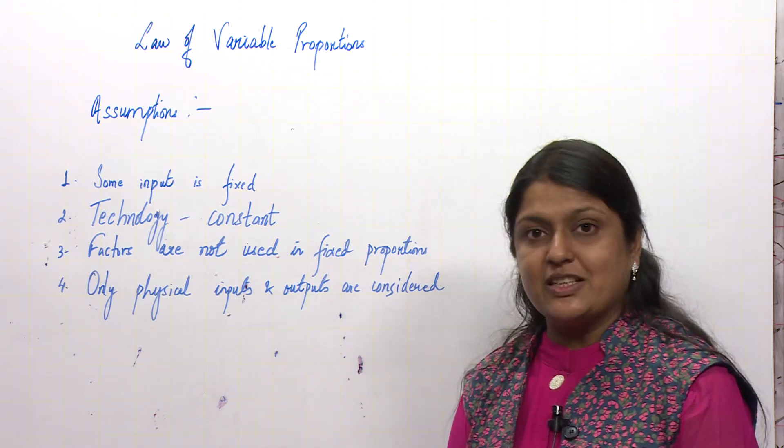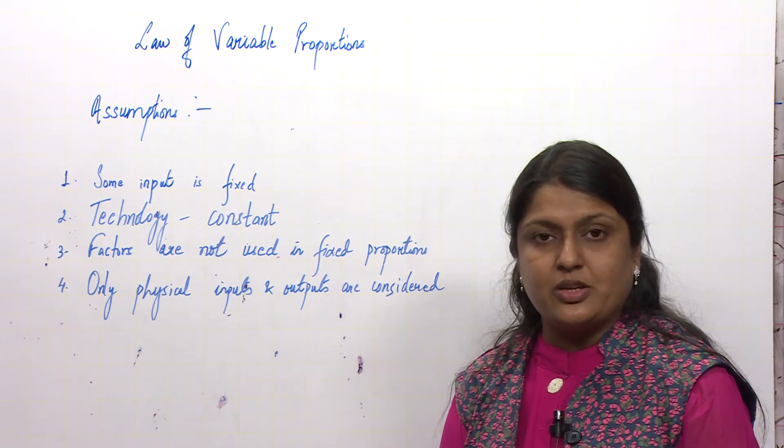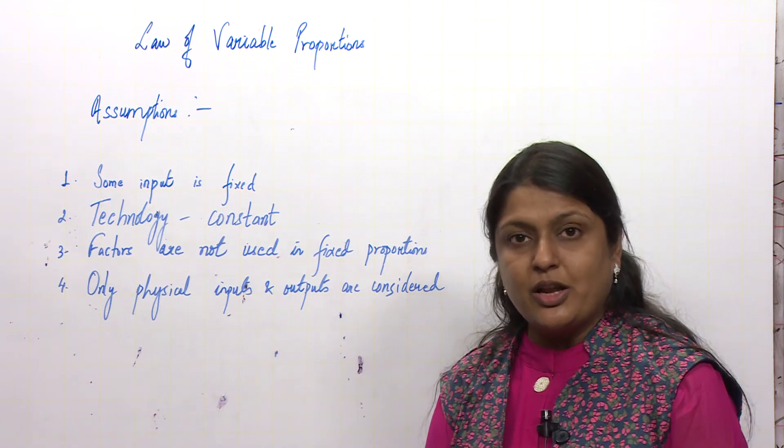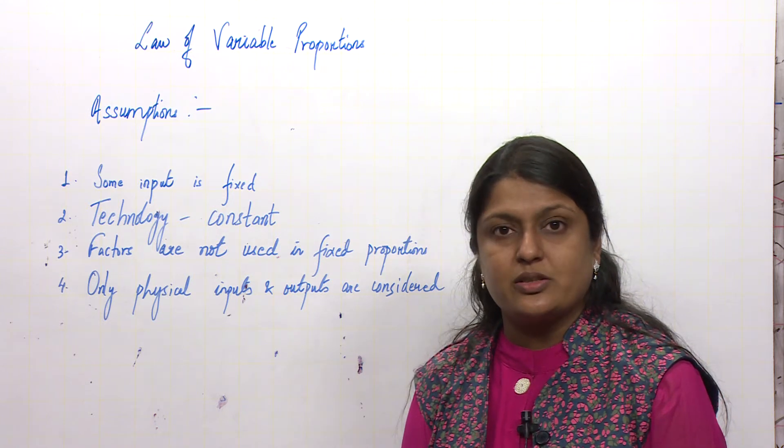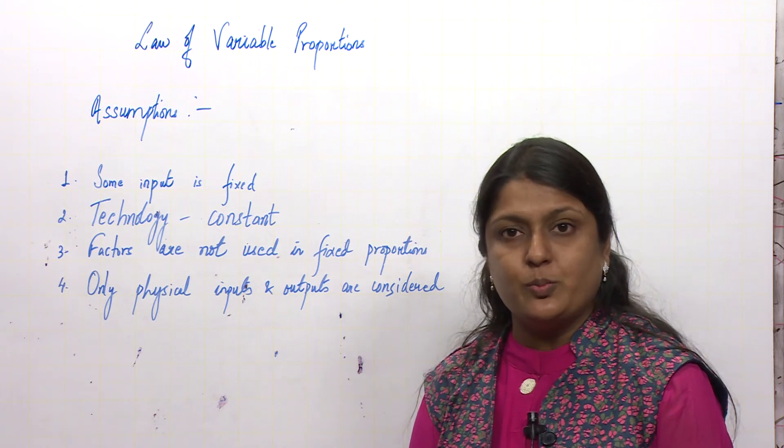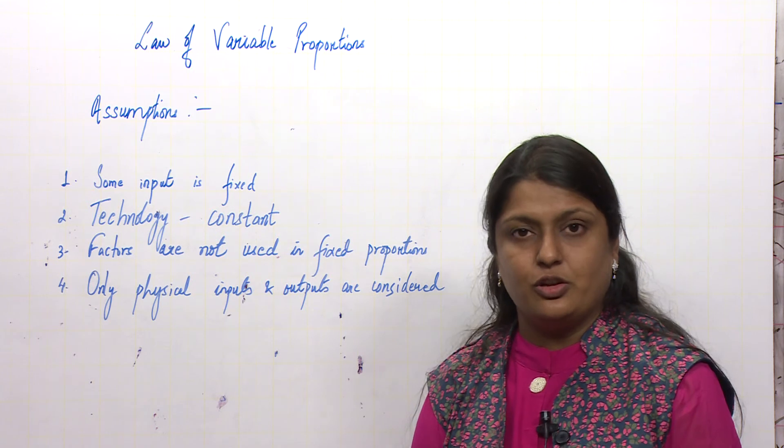And we consider only physical inputs and outputs. That means we use production in physical terms, not in money terms. If production is considered in money terms, that is called cost. Here we measure the quantities of inputs and outputs in physical terms. This is what we assume for the law.